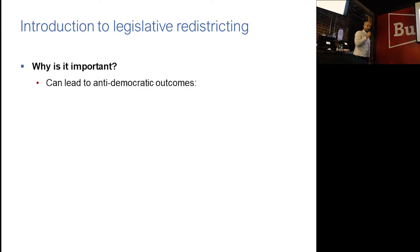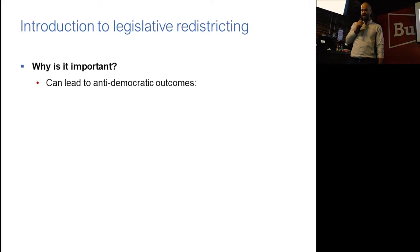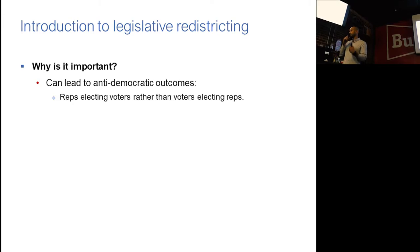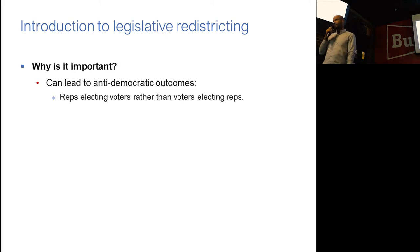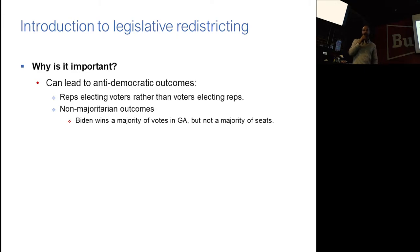Why is this important? A big reason is that in a democracy with democratic elections, redistricting can lead to anti-democratic outcomes. When you have legislators drawing districts, you have representatives electing their voters rather than voters electing their representatives. The way you design districts can determine the composition of the legislature. A minority of the votes can be translated into a majority of the seats, and a majority of the votes can be translated into only a minority of the seats — hence non-majoritarian outcomes.